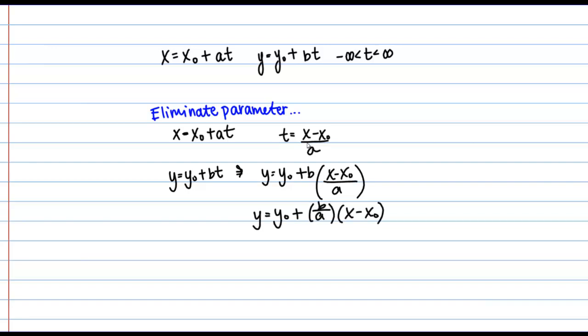I can rearrange this further as Y minus Y₀ equals B over A times X minus X₀. Do you recognize this form? This is actually point-slope form for a line.